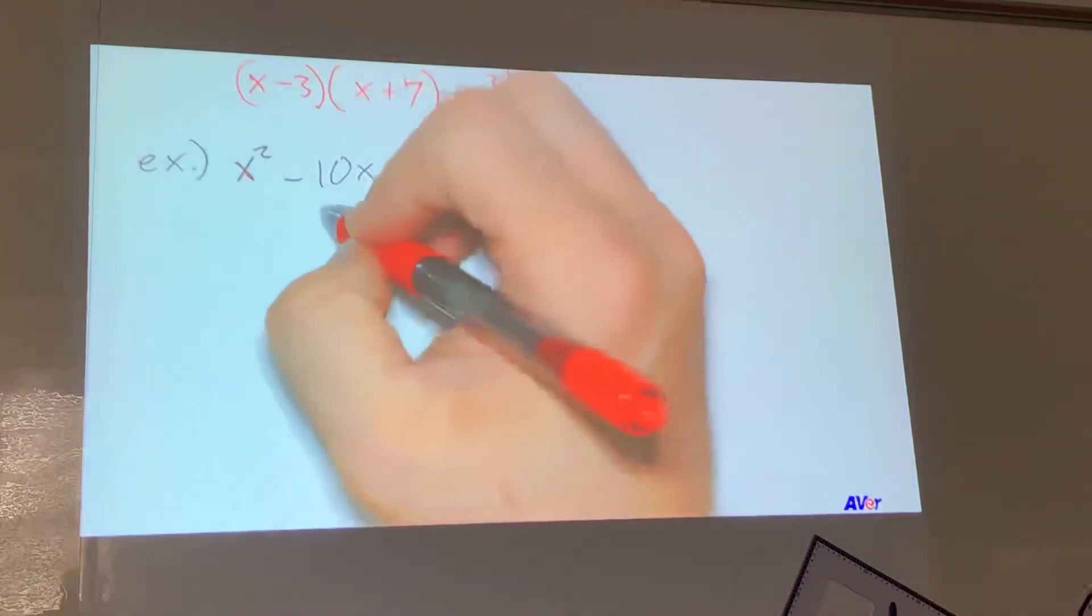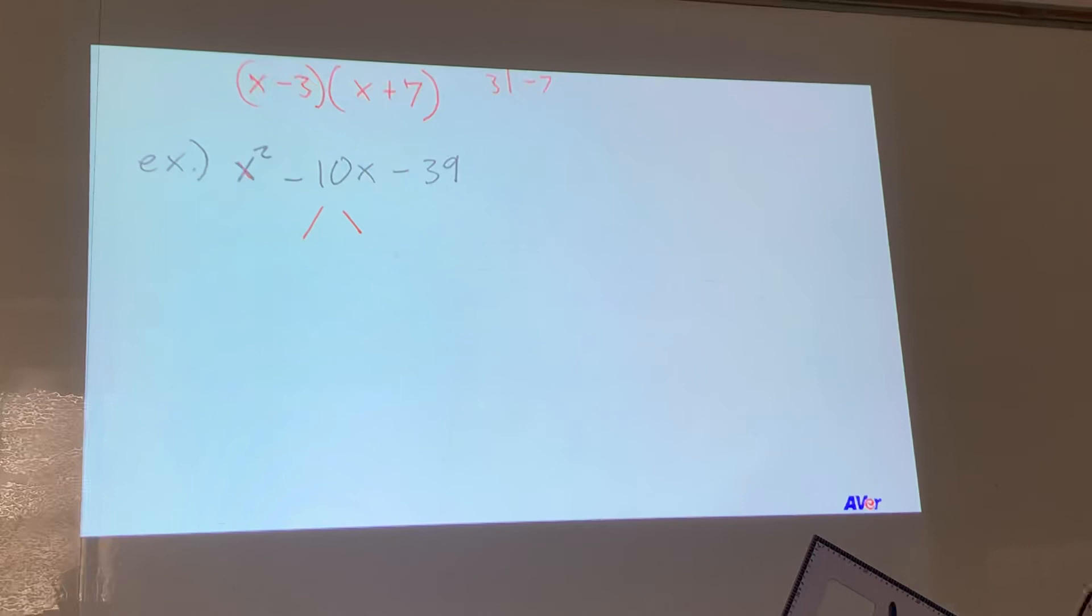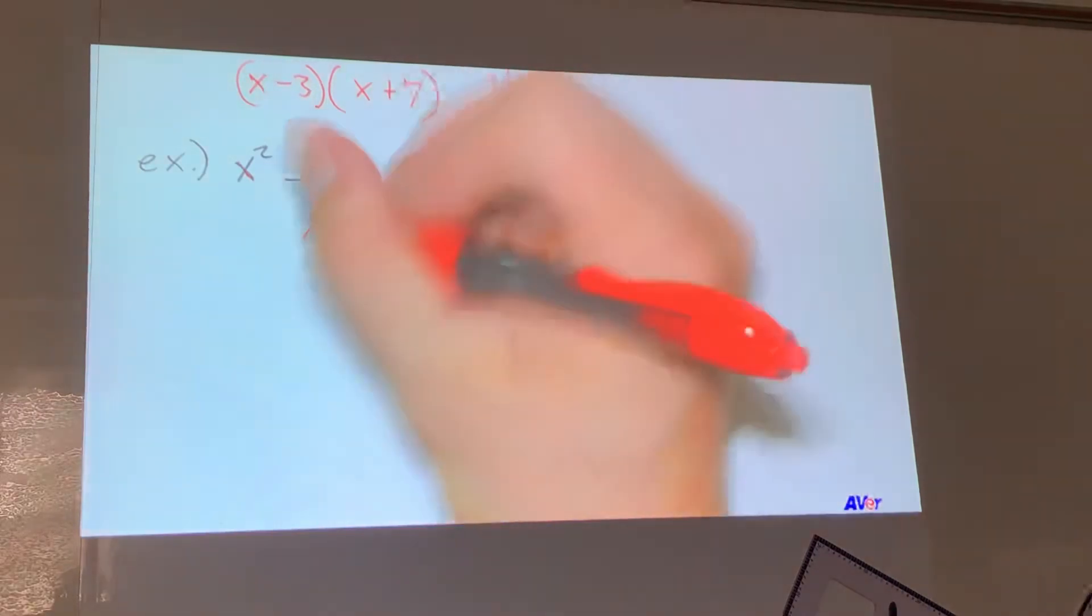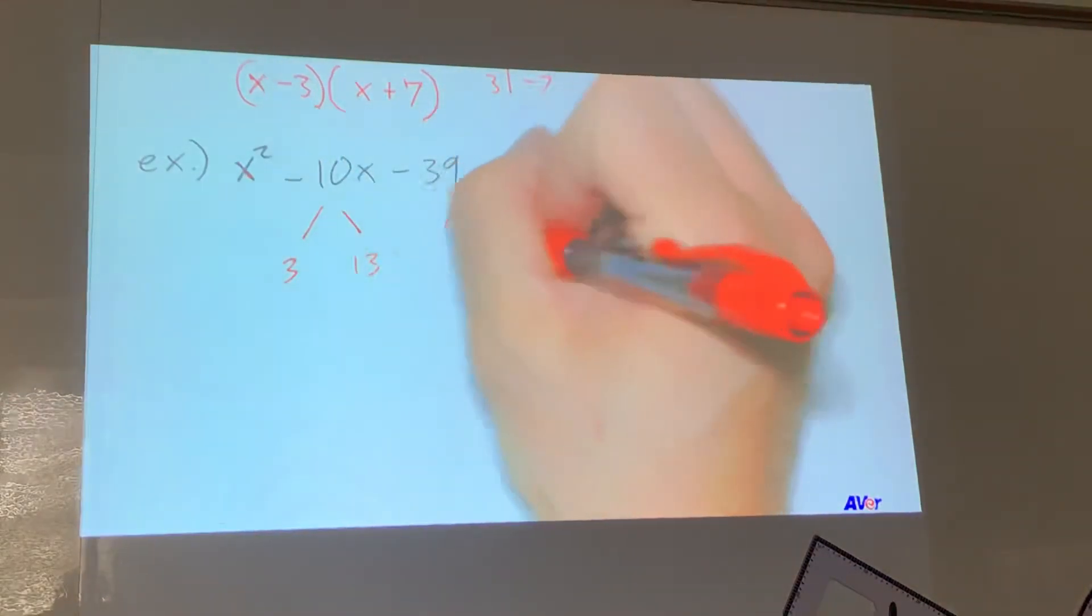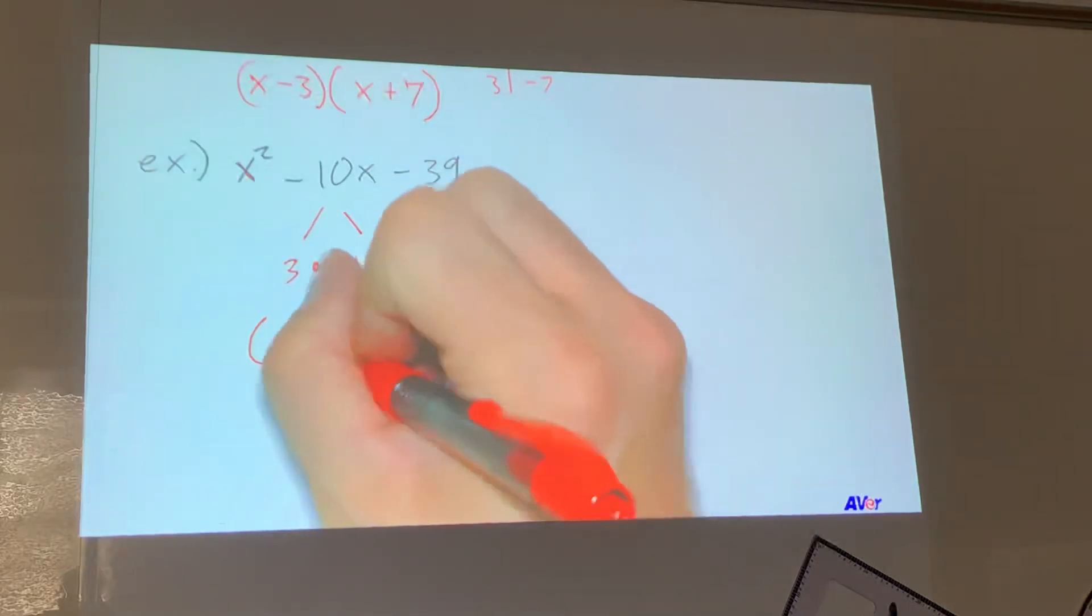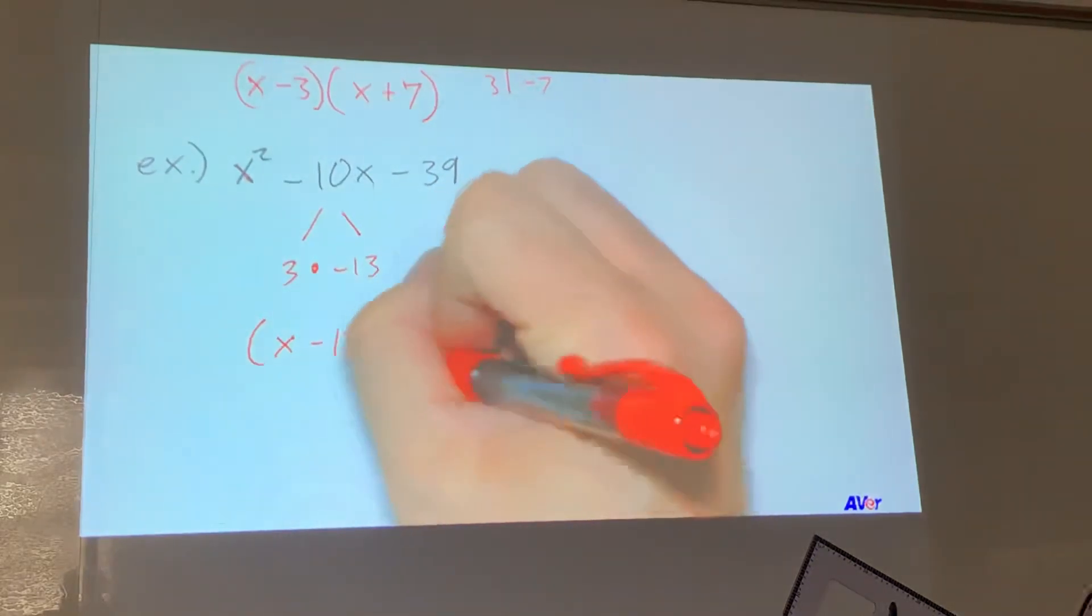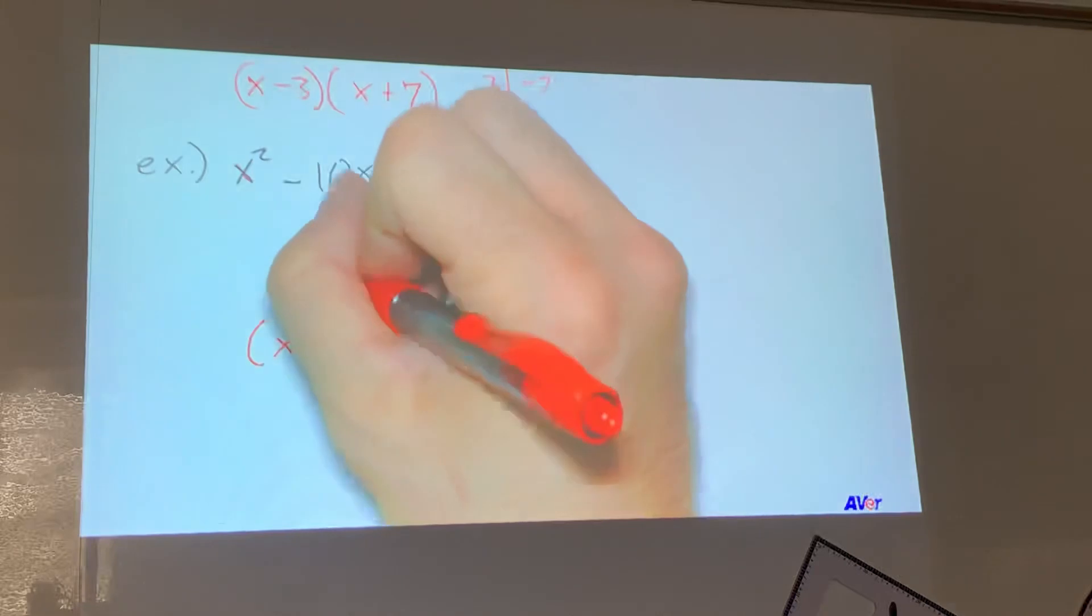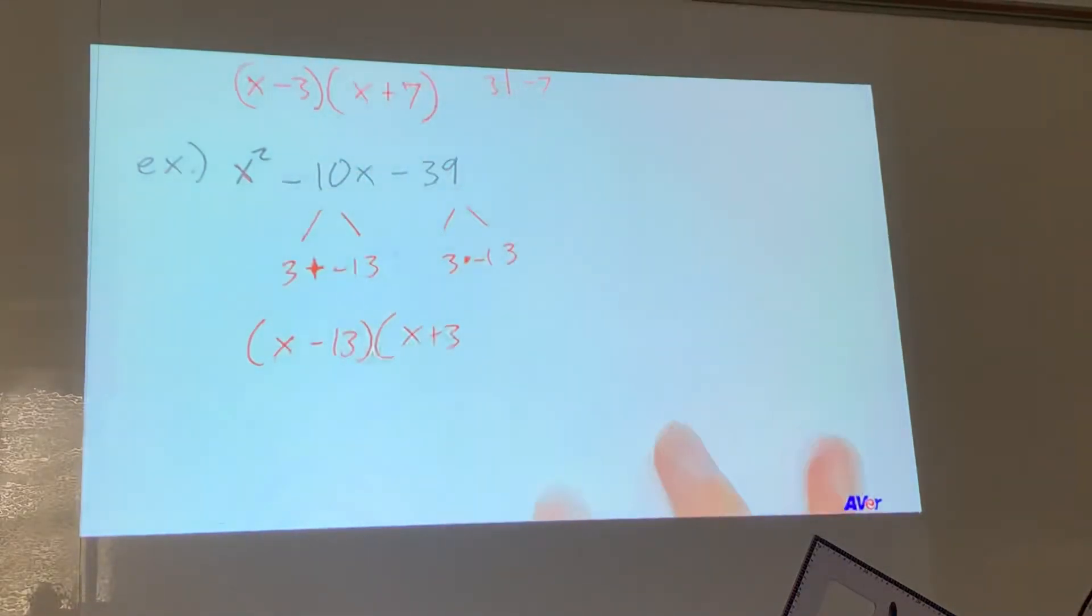Alright, the numbers here are negative 13 and positive 3. 3 times 13 is negative 39. Here, let me write. 3 and 13, right? Which one has to be negative? The 13. The 13. Otherwise, that 10 would be positive, right? Alright. So this is x minus 13 times x plus 3. Oh, I'm sorry. I should put a plus there. Thank you. Whoever said that. Thank you.